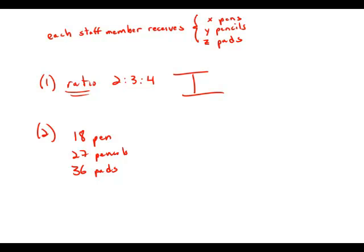First of all, notice that these numbers are in the same ratio, 18 to 27 to 36. This is, in fact, the same ratio as two to three to four, so that makes sense.